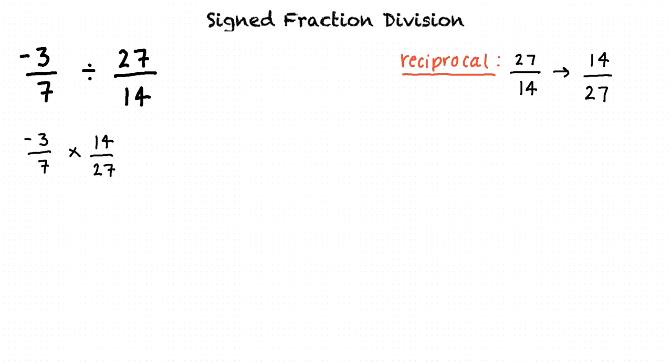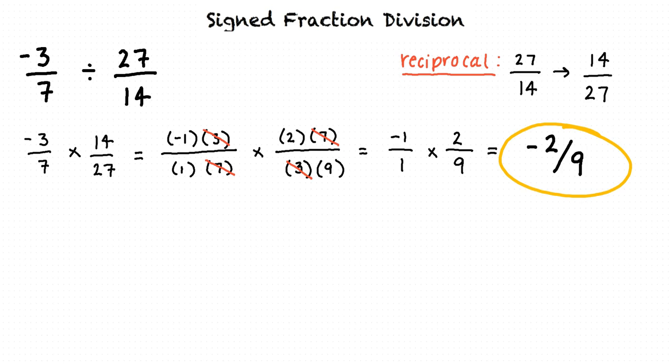Next, we can cancel the common factor of 3 in the numerator of the first fraction and the denominator of the second fraction. This results in -1/1 times 2/9, which gives us -2/9.